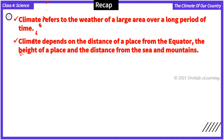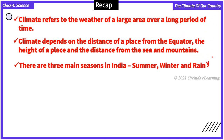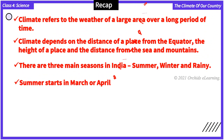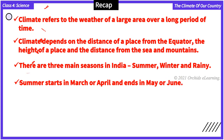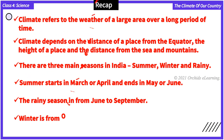There are three main seasons in India: summer, winter, and rainy. Summer starts in March or April and ends in May or June. The rainy season is from June to September. Winter is from October to February or March.